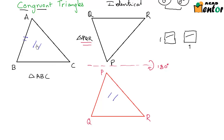This side looks exactly the same as this side, with AC equal to PR, while QR looks identical to BC. Don't you agree?